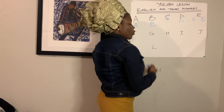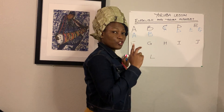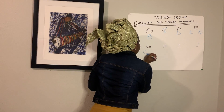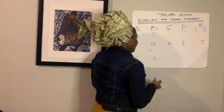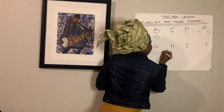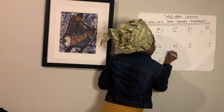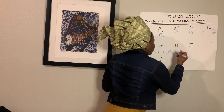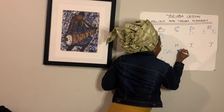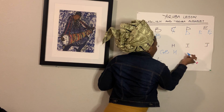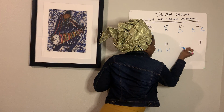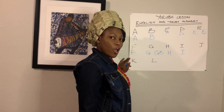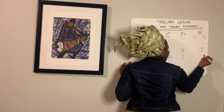G — we have two G's. One is 'g' and the other one is 'gb' — G with two letters. H will be 'e', I will be 'e', and J will be 'g'.